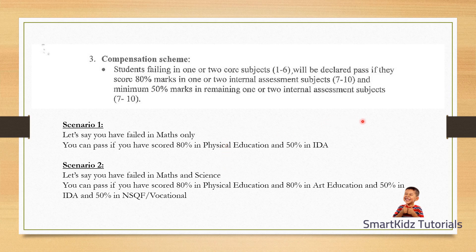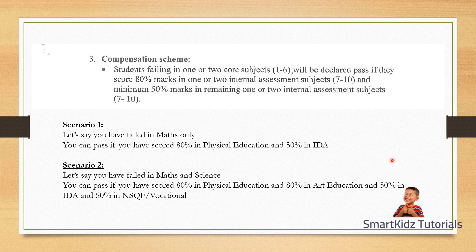This compensation scheme applies to all core subjects — not just maths and science — it includes languages and social science as well. The circular does not mention what happens if you fail in more than two subjects; the assumption is that if you fail in more than two, you are considered failed and the compensation scheme will not apply. This is the speaker's understanding of the circular; you may have other queries which you can ask your teacher.